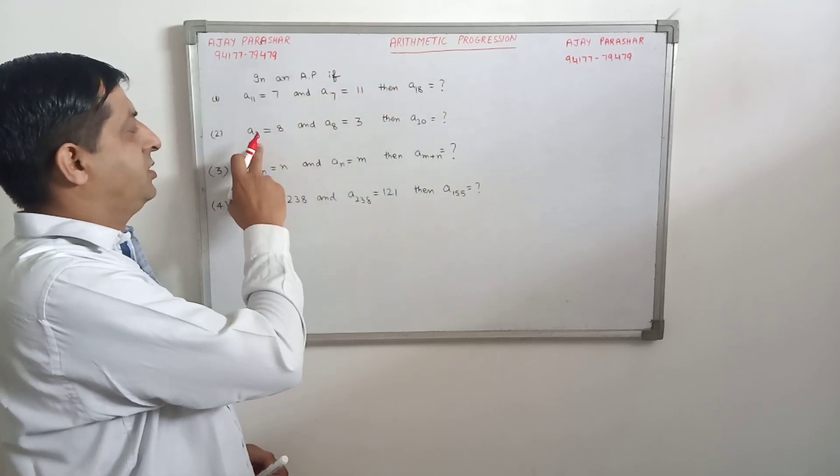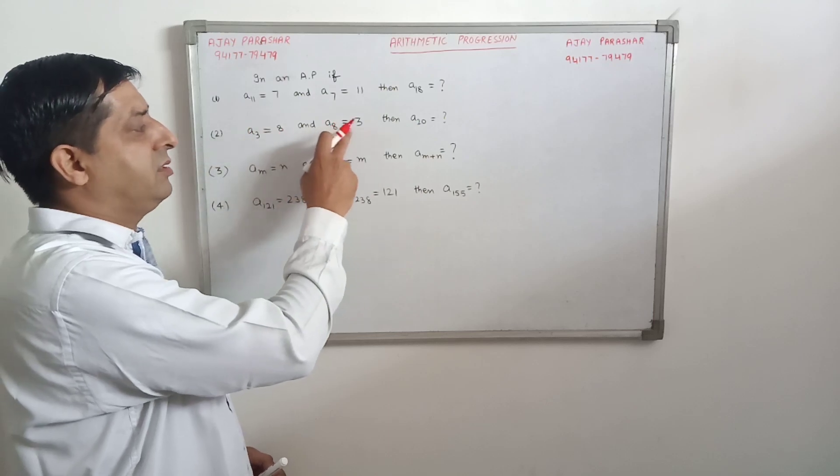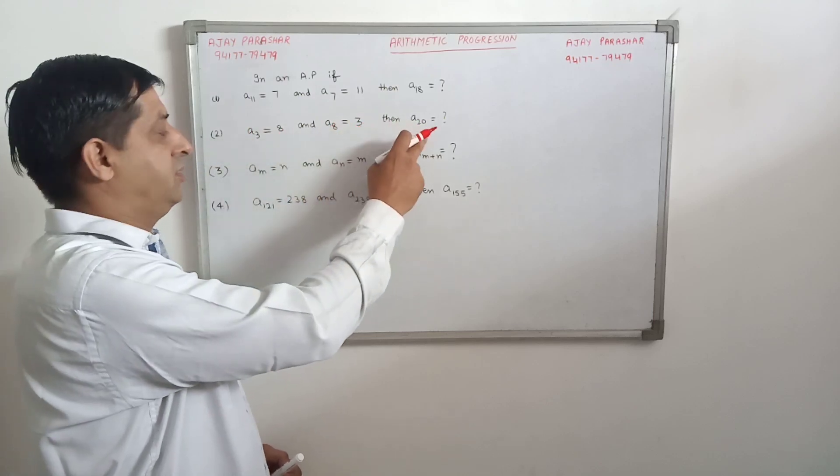In the second question, if the 3rd term is 8 and 8th term is 3, then what is 20th term?